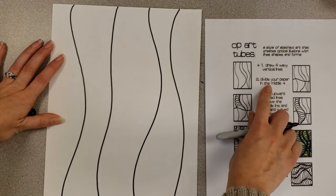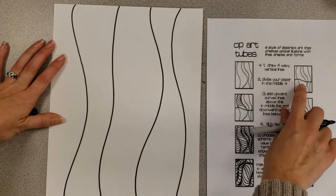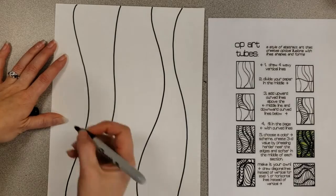Now step two says divide your paper in the middle and they also use a wavy line for that.